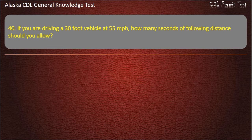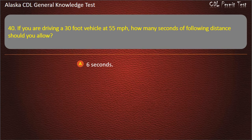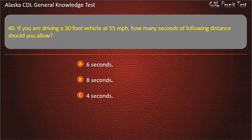Question 40. If you are driving a 30-foot vehicle at 55 miles per hour, how many seconds of following distance should you allow? 6 seconds, 8 seconds, or 4 seconds. Answer: 4 seconds.